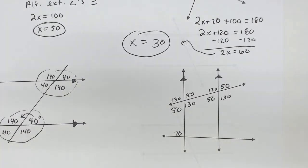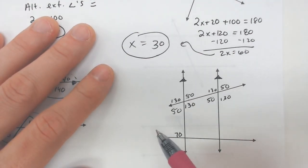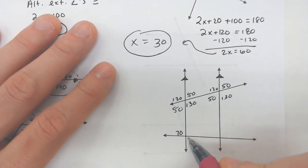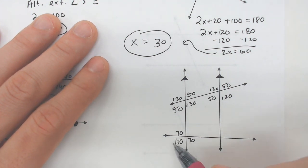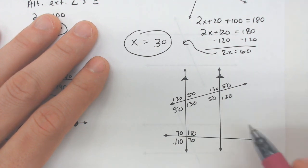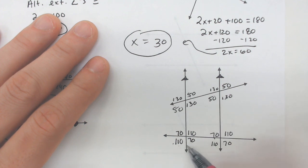After that, focus on the other transversal — notice each transversal is its own thing with its own angles. This 70 gives a vertical angle of 70, and 110 because 110 and 70 make a straight line. Fill in 110 on the other side as well. Then we duplicate it all over to the lower intersection: 70, 110, 110, 70 — mirroring what we have here and establishing all the vertical angles.